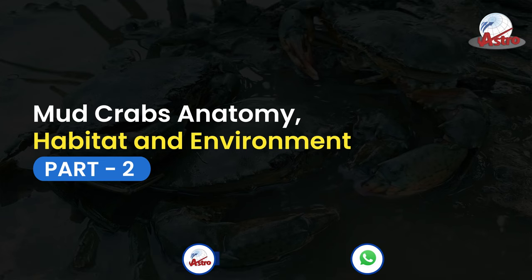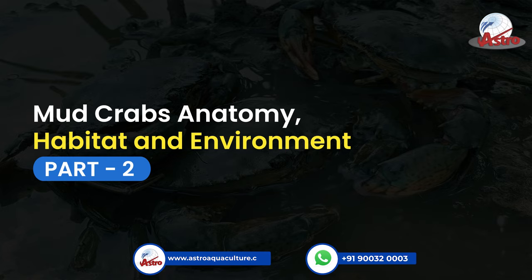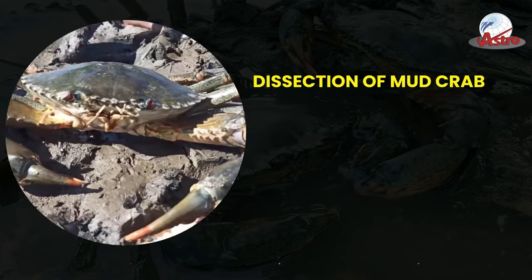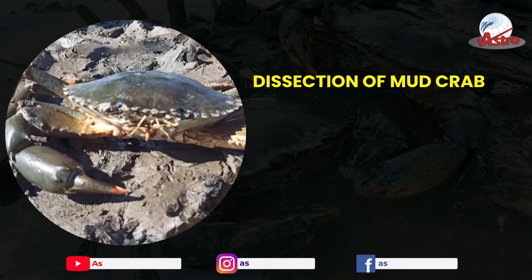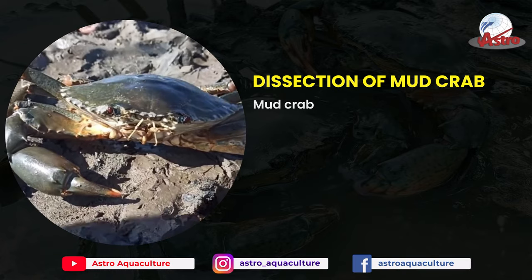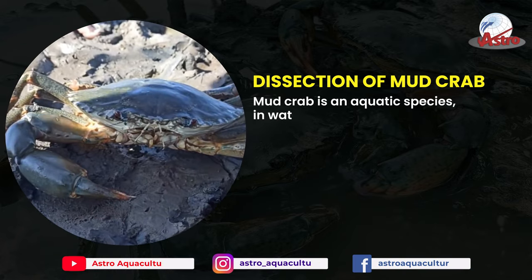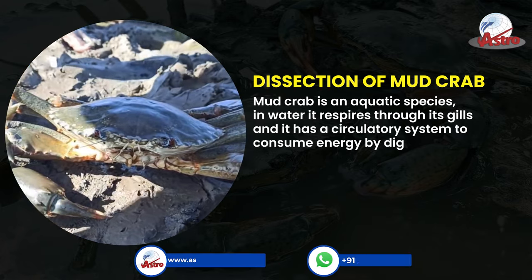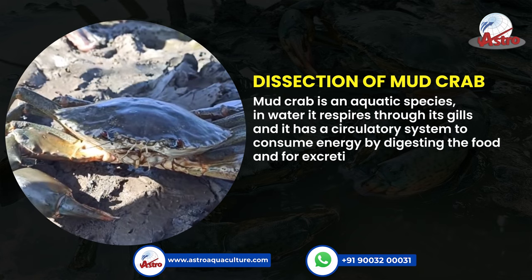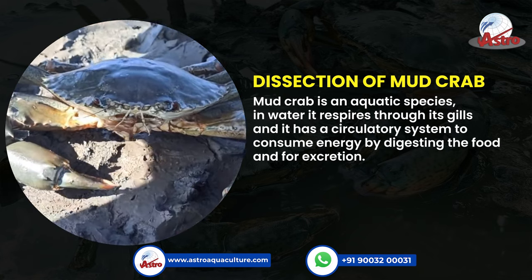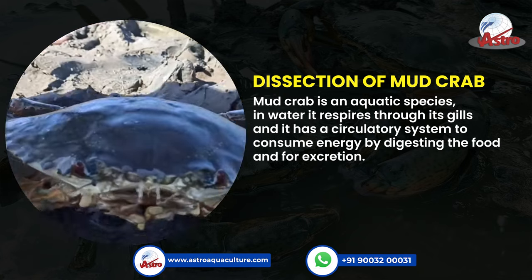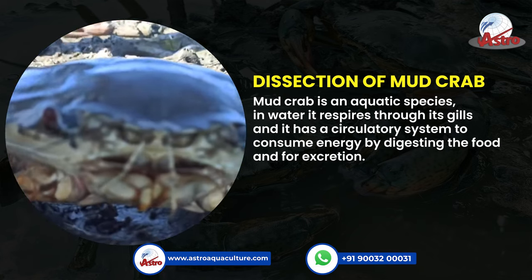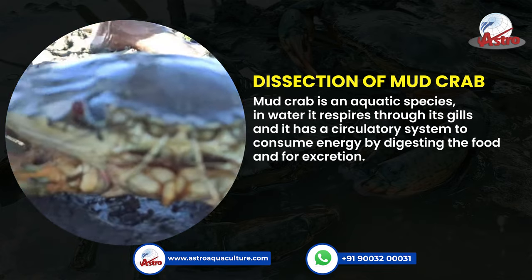Mud Crab's Anatomy, Habitat and Environment Part 2. Dissection of Mud Crab: Mud crab is an aquatic species; in water it respires through its gills and it has a circulatory system to consume energy by digesting food and for excretion.